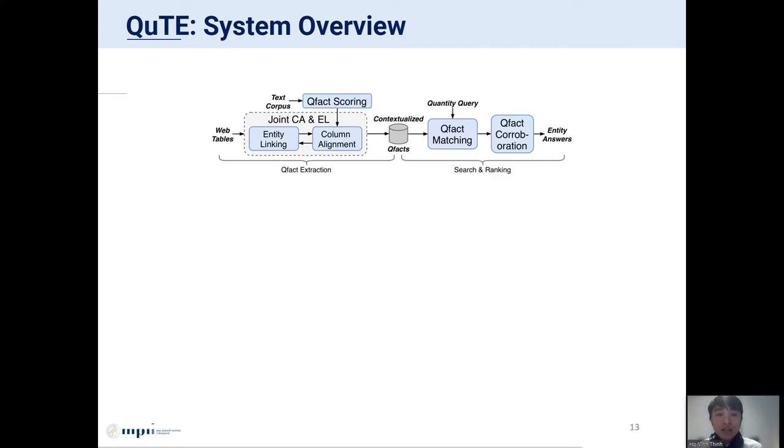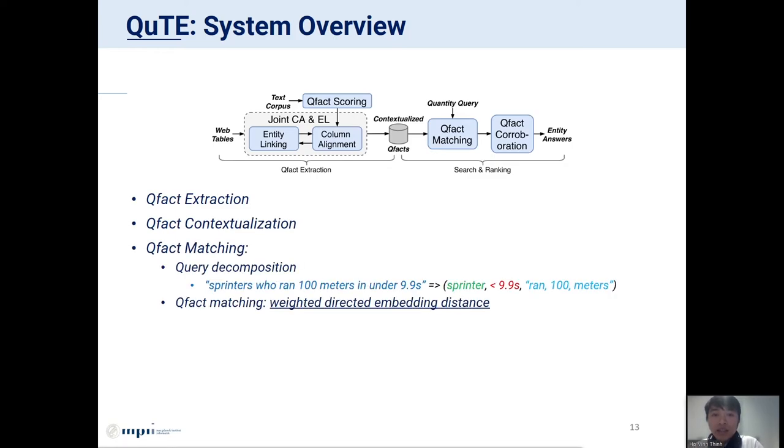Here is a system overview of our quantity search system, which is called QUTE. Our system consists of the following main steps. The first two steps are QFact extraction and QFact contextualization that we have described before. These are followed by the QFact matching step, in which we first decompose the input quantity query into the triple of entity type, quantity condition, and query context. Then we match this triple with the QFacts extracted from before, using our proposed measure, which is called weighted directed embedding distance. The final step is QFact collaboration, which enhances the ranking of QFacts by considering the mutual consistency between the candidate answers. This produces the final QFact ranking and returns the results to the user.